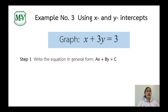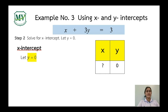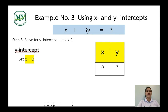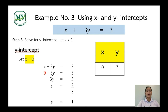Next example: let's graph x plus 3y equals 3. Step number 1: write the equation in general form. This equation is already in general form, so we proceed to step 2 — solve for the x-intercept. Let y equal 0: x plus 0 equals 3, so x equals 3. Our x-intercept is (3, 0). Step number 3: solve for the y-intercept. Let x equal 0: 0 plus 3y equals 3. Dividing both sides by 3, y equals 1. Our y-intercept is (0, 1).